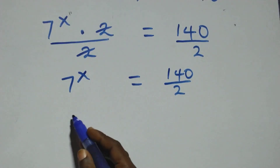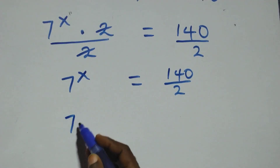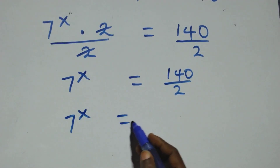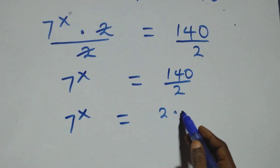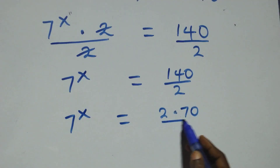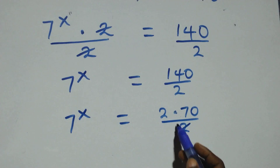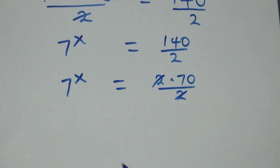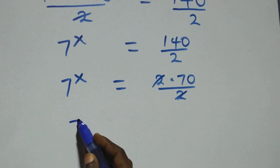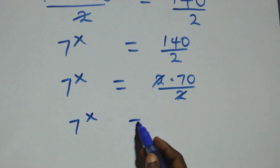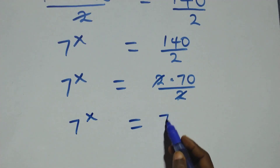Then here we can write that 7 raised to power x equals 140 over 2. The 2s cancel each other, and we have 7 raised to power x equals 70.